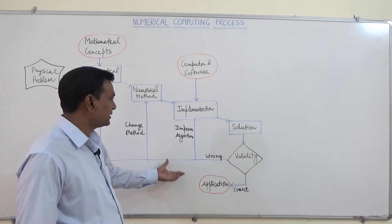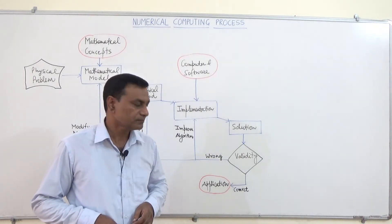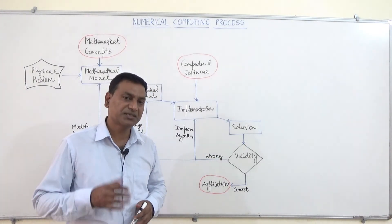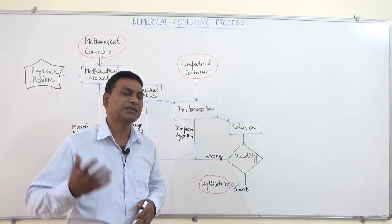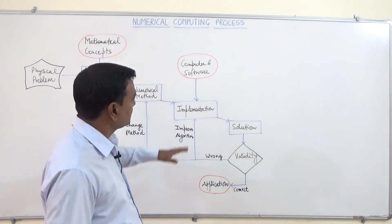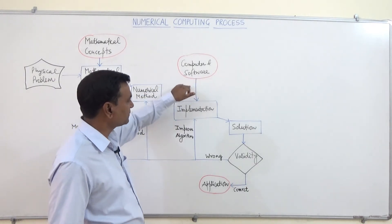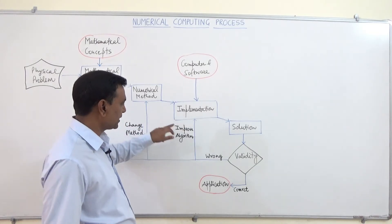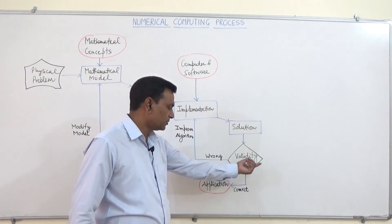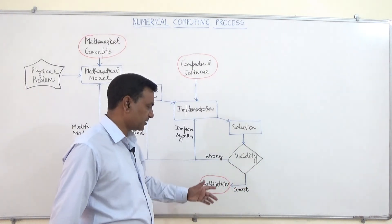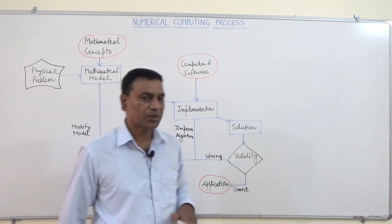There is also a possibility that the program developed for this particular numerical method may also be wrong. In that case, we need to change the program — change the data types, fix syntax, or whatever is needed. After incorporating the computer and software again, we develop another program, find the solution, and check its validity on the test data. If it is correct we stop here — this is the stopping condition. If it is wrong, we again change all the phases.